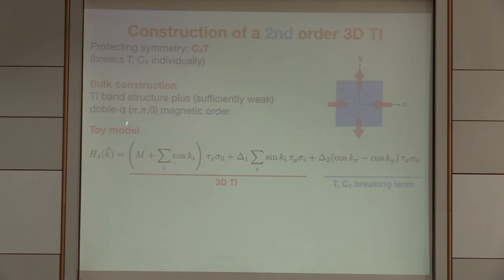We can also write down a simple bulk model for this. Here, the first part of this is a 4x4 model. The first part is just the usual Dirac model for a topological insulator. It's basically three anticommuting matrices dotted into sine kx, sine ky, sine kz that produces Dirac cones at all time reversal invariant momenta. Then this is a mass term that gaps them out in such a way that you have a topological insulator in the end.